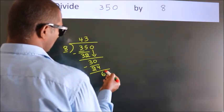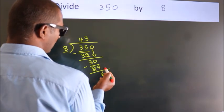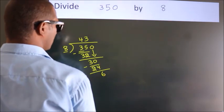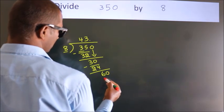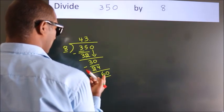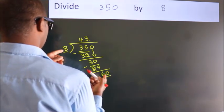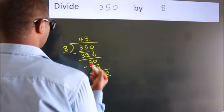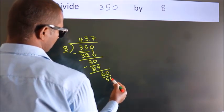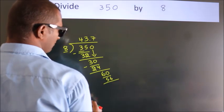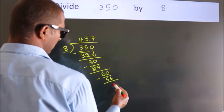After this, no more numbers to bring it down. So, what we do is, we put dot take 0. So, 60. A number close to 60 in 8 table is 8 sevens 56. Now, we subtract. We get 4.